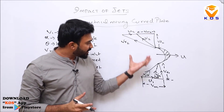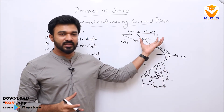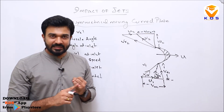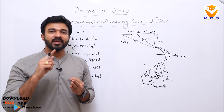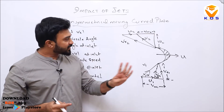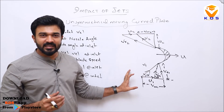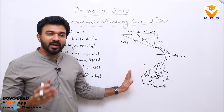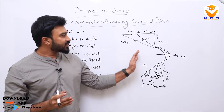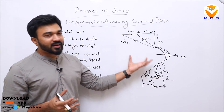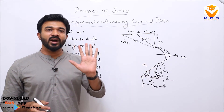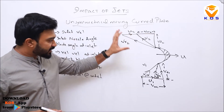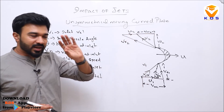This velocity triangle is used in the analysis of the Pelton wheel turbine, Kaplan turbine, Francis turbine, and centrifugal pump. We analyze this velocity triangle for all these machines. This is a general velocity triangle — we have both inlet and outlet triangles.